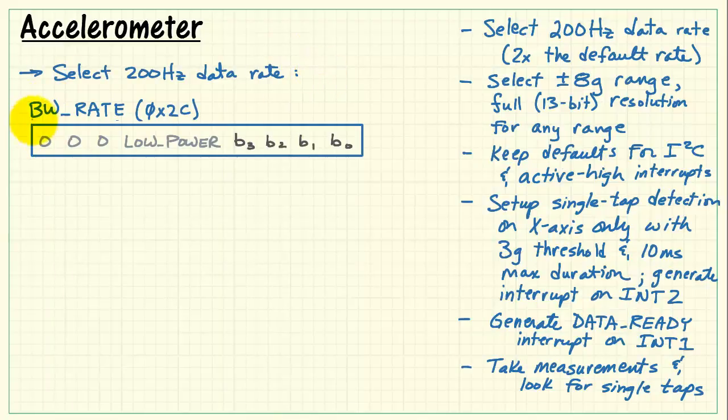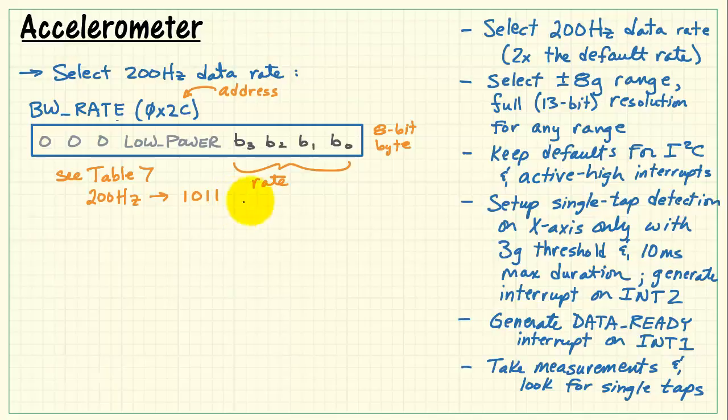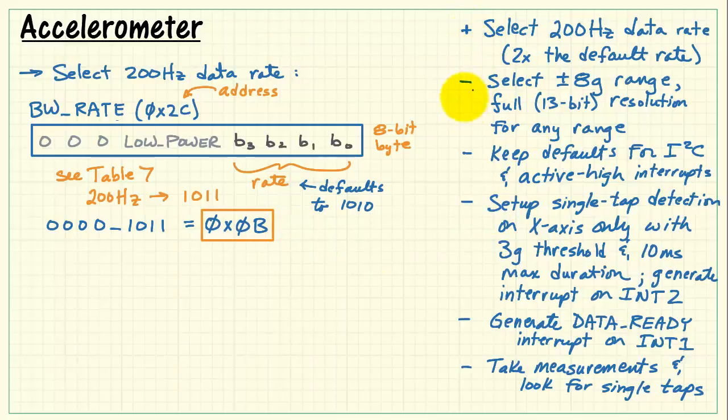All right, let's begin with selecting the 200 Hz data rate. This is located in the BW rate register address hexadecimal 2C. I'll use gray to indicate the bit fields that I'm not going to work with, and then black to be the ones that are of interest. The rate bits are the lower 4 bits. Table 7 of the datasheet says that 200 Hz is selected by 1011 for that bit field. By the way, the rate defaults to 1010. This is one of the three registers that has a non-zero default. Pull those bits out, express that as a hexadecimal value. We would have 0, and these 4 bits is hexadecimal B. So we want to write hexadecimal B to address 2C.